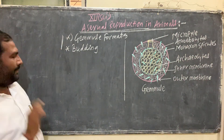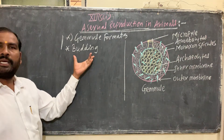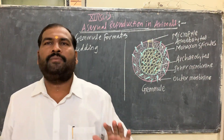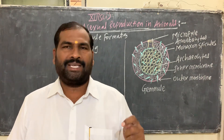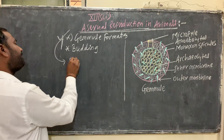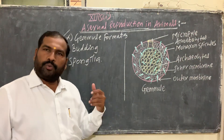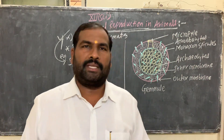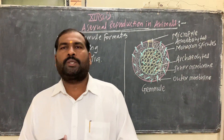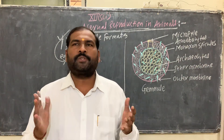These are the types of asexual reproduction. Animals asexually reproduce by means of gemmule formation and budding. First of all, we will see gemmule formation. Gemmule formation takes place in sponges — for example, Spongilla. In Spongilla, an internal bud is produced by the sponges during unfavorable conditions. During the unfavorable condition, an internal bud — nothing but the gemmule — is formed by the sponges.